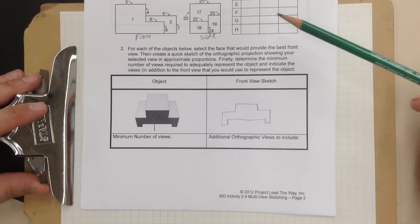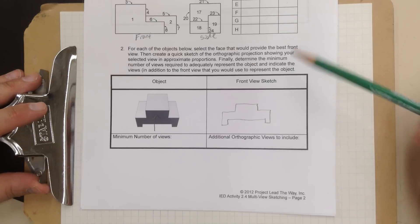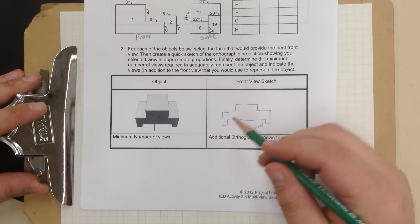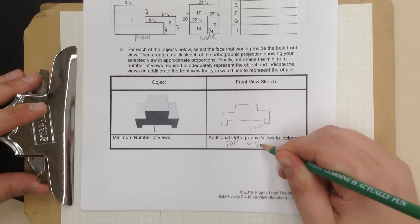So the additional orthographics I would use to include, I've got my front here already. That's my front. I would probably include a top and a side.